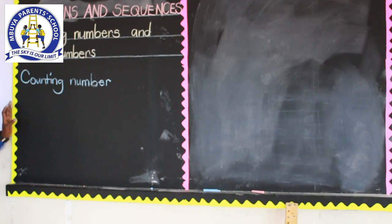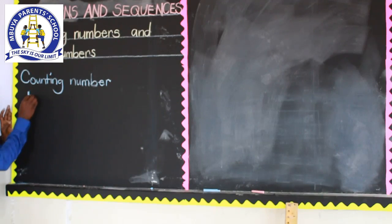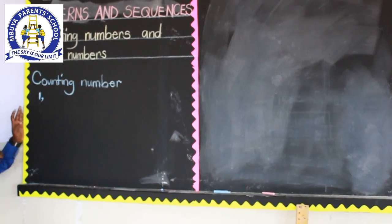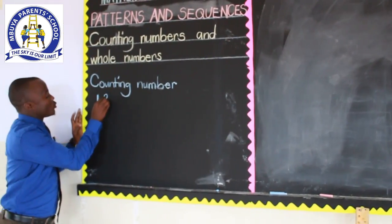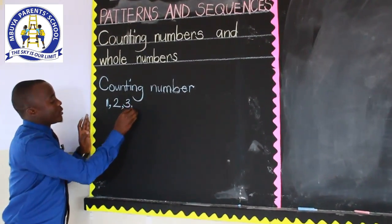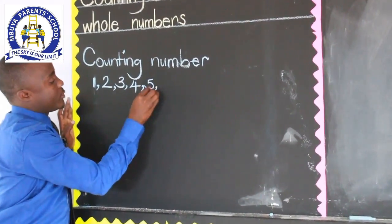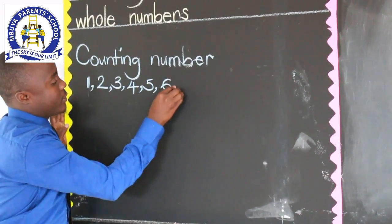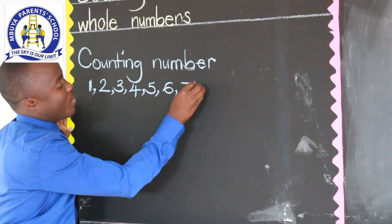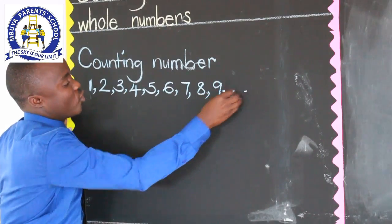Our first counting number is always one. From one, the next counting number is two, then three, four, five, six, seven, eight, nine, and so on.